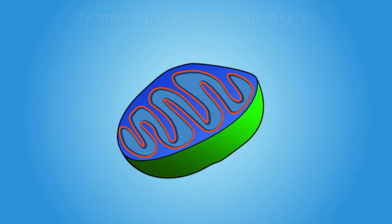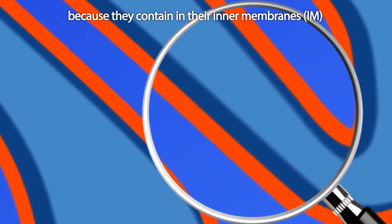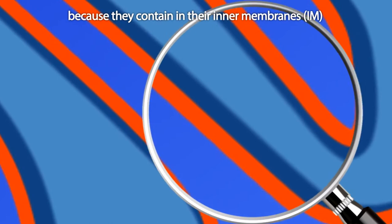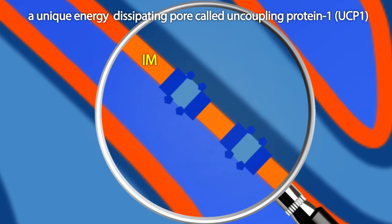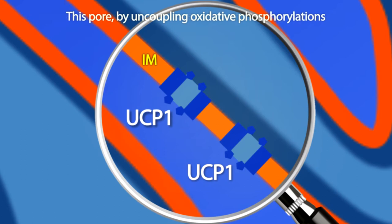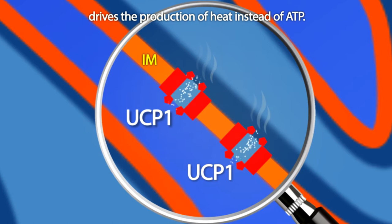The brown adipocyte mitochondria produce heat because they contain in their inner membranes, marked IM, a unique energy-dissipating pore called uncoupling protein 1, UCP1. This pore, by uncoupling oxidative phosphorylations, drives the production of heat instead of ATP.